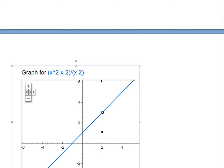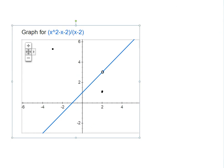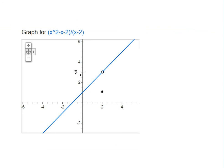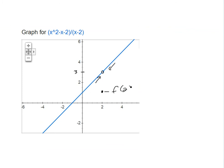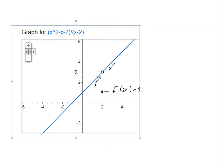If you draw this, it looks like a straight line but at x=2 there's a discontinuity. The limit is 3 as you approach x=2, but f(2)=1, so they don't match. This is again called a removable discontinuity.